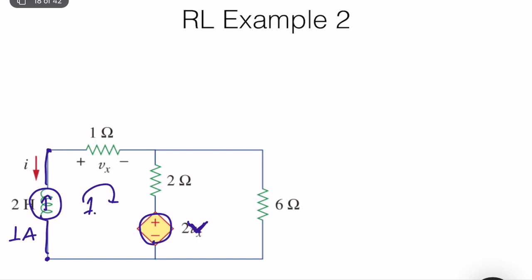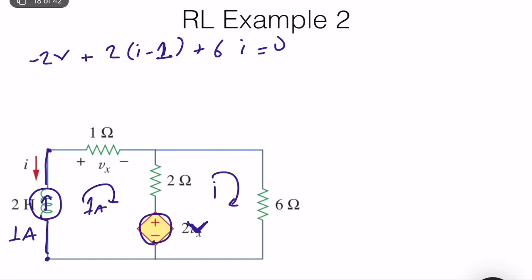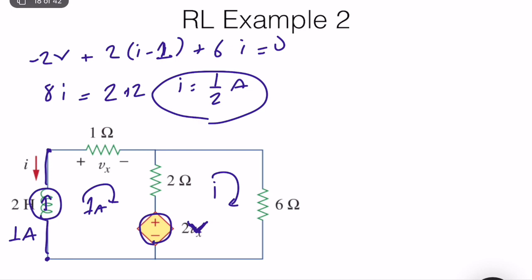The external current source is 1 A; call the mesh current i. Writing the mesh equation for the first mesh: −2 V + 2i + 6(i − 1) = 0, which gives 8i = 2 + 6, so i = 1/2 A. Now we need to compute the terminal voltage Vs.